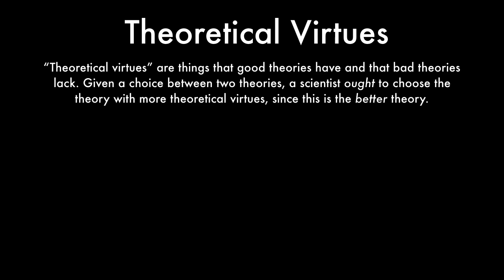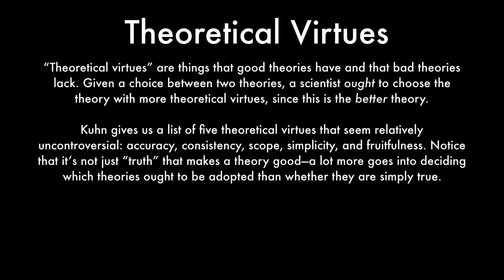Theoretical virtues are things that good theories have and that bad theories lack. Given a choice between two theories, a scientist ought to choose the theory with more theoretical virtues, since this is the better theory. Kuhn gives us a list of five theoretical virtues that seem relatively uncontroversial: accuracy, consistency, scope, simplicity, and fruitfulness.